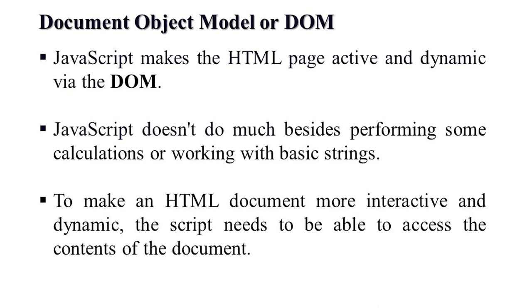JavaScript doesn't do much besides performing some calculation. To make an HTML page more interactive or dynamic, we need scripts like JavaScript to access the content of a web page HTML document. JavaScript can access the HTML document only through the Document Object Model. JavaScript communicates with the browser — like Google, Mozilla, Internet Explorer — only through properties, methods, and events in the interface.